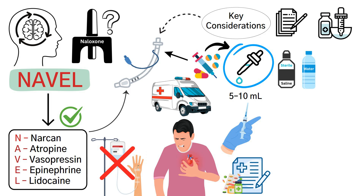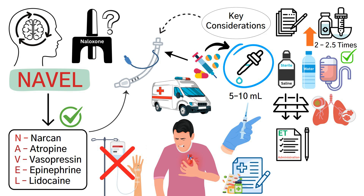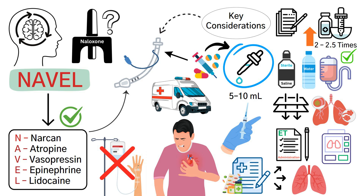The dose is typically 2 to 2.5 times higher than the IV dose to ensure effective absorption through the pulmonary vasculature. Always follow endotracheal administration with positive pressure ventilation to help distribute the medication into the lungs.